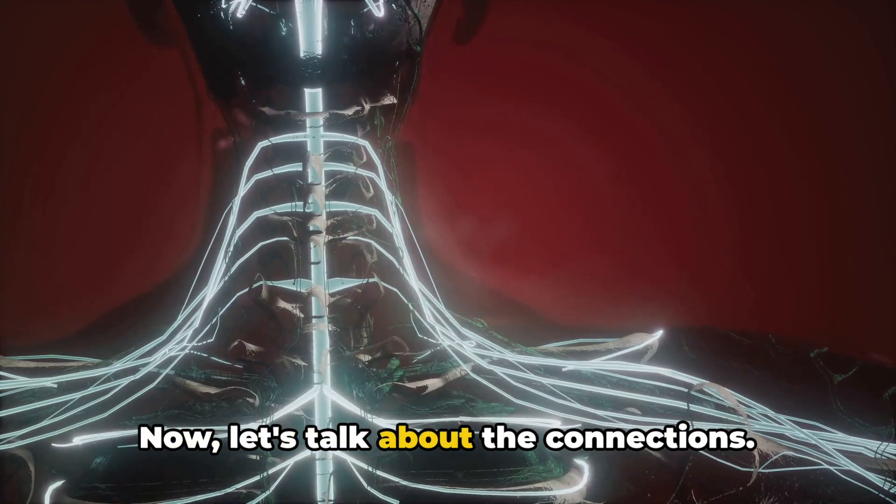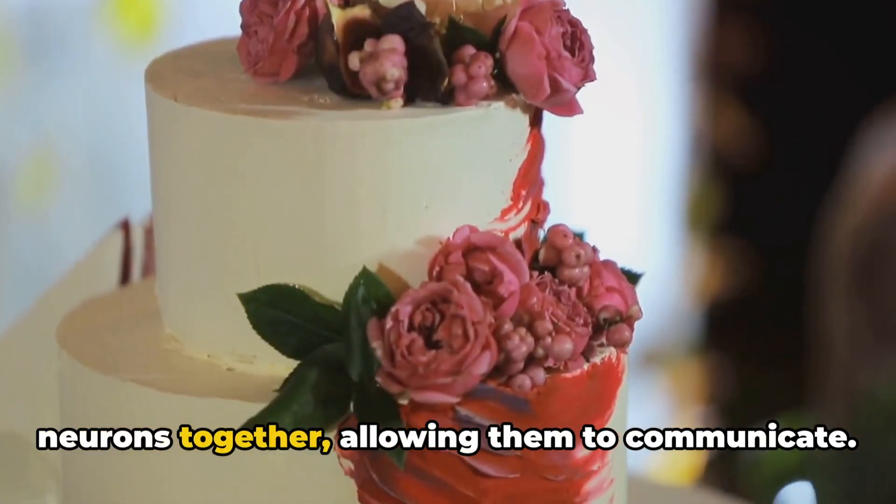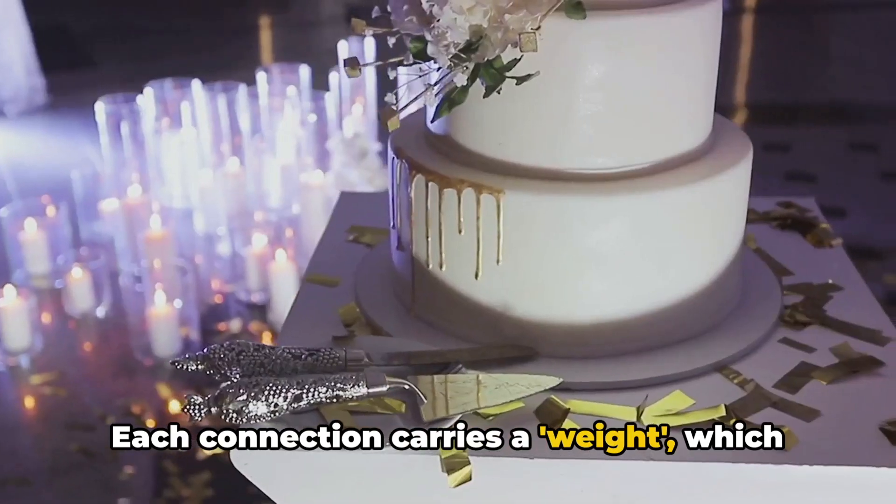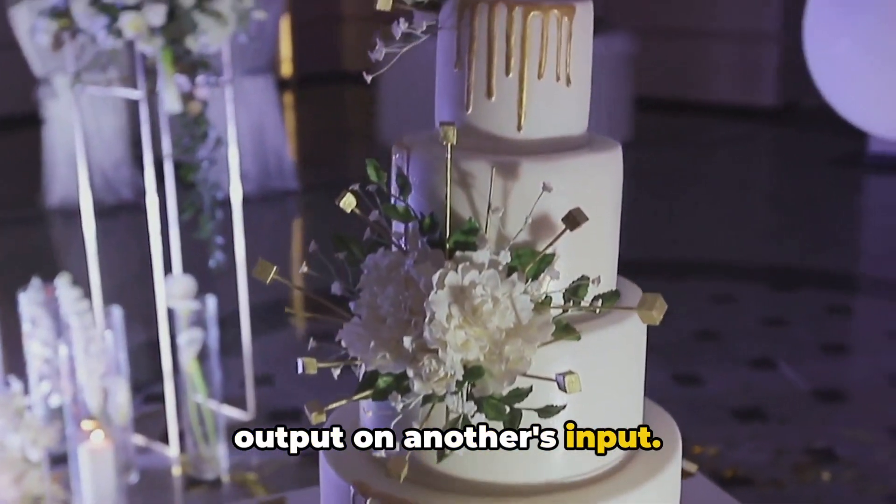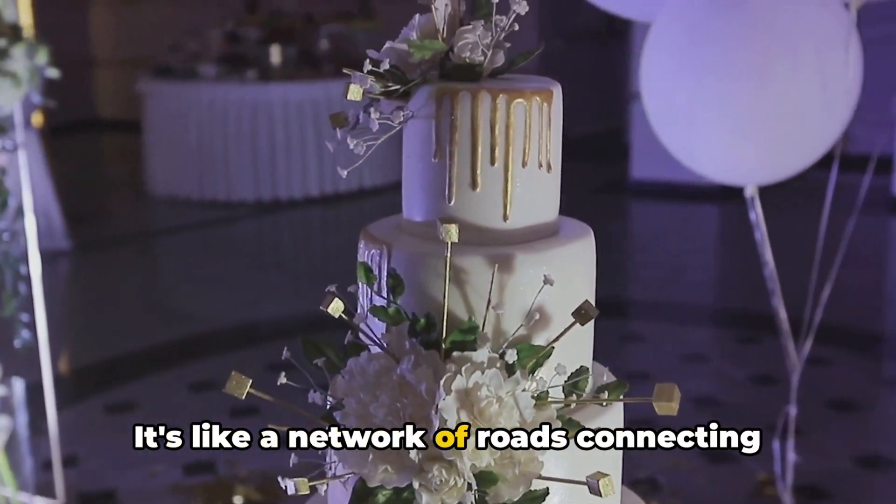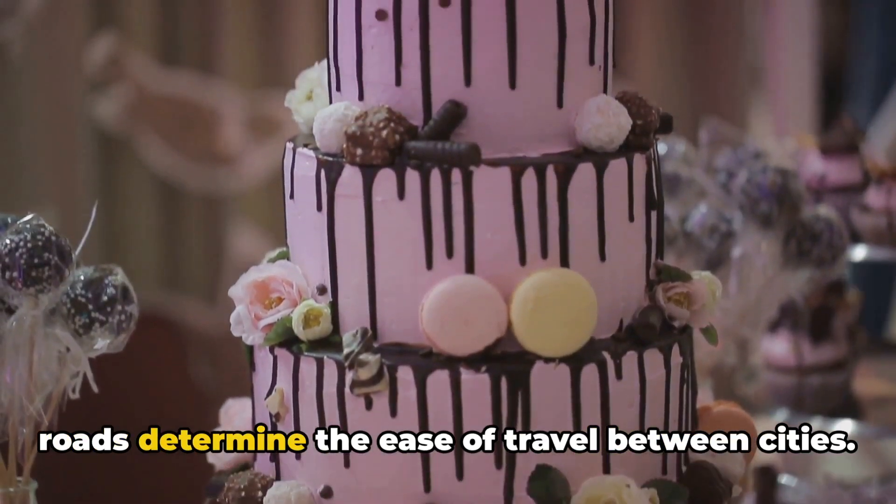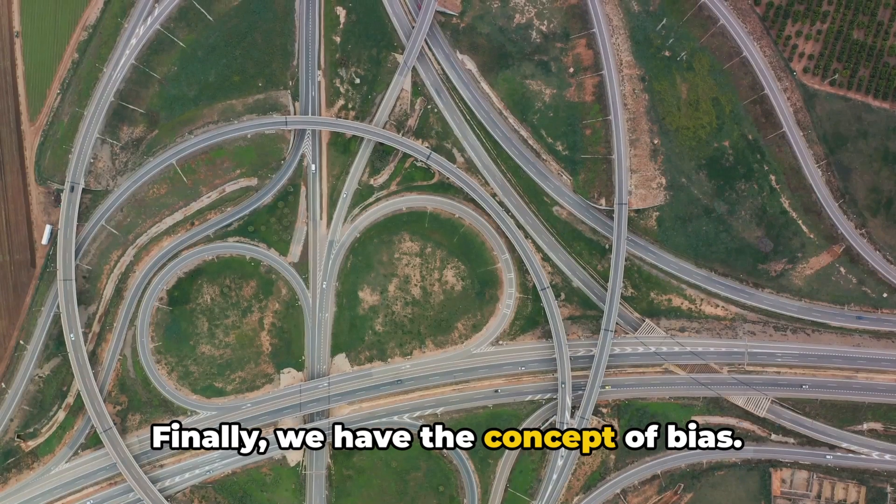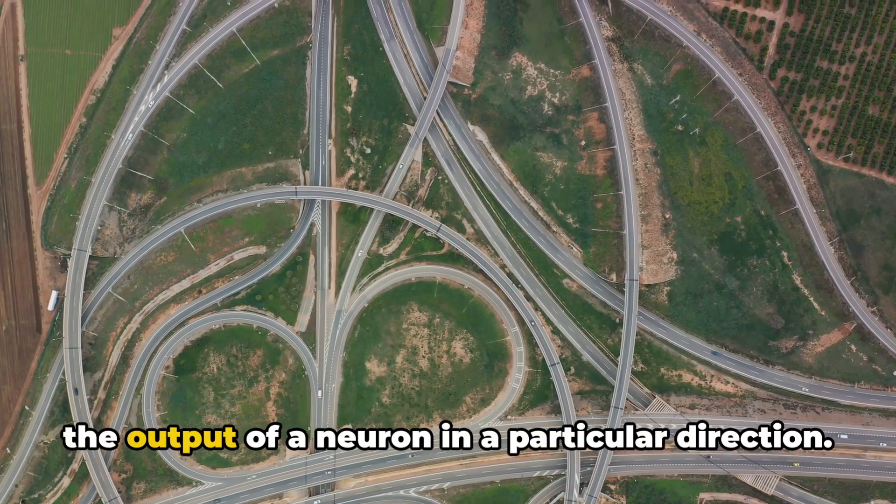Now let's talk about the connections. These are the highways that link the neurons together, allowing them to communicate. Each connection carries a weight, which determines the influence of one neuron's output on another's input. It's like a network of roads connecting cities, where the width and quality of the roads determine the ease of travel. Finally, we have the concept of bias. Bias is like a tipping scale that nudges the output of a neuron in a particular direction.